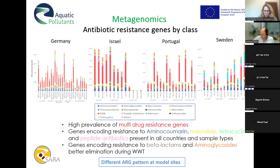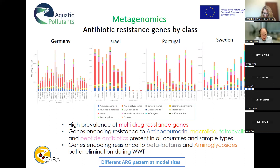Some results from the metagenomics done by our colleagues in France — they analyzed the samples and found a high prevalence of multi-drug resistant genes generally, and also specific genes. Different patterns are visible depending on the area: the pattern in Sweden is different from patterns in Germany, Israel, or Portugal. The more detailed analysis is still ongoing — our colleagues collected all samples and did metagenomics, and it is a lot of data to analyze. We will continue the project until the end of this year.